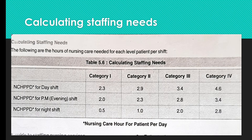For the evening shift, the hours are 2.2, 2.8, and 3.4 respectively. For the night shift, patients generally require 2.8 nursing care hours. There are four categories of classification and areas of care, and based on each category, the time needed for patient care varies across the morning, evening, and night shifts.